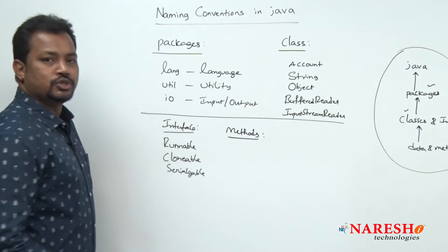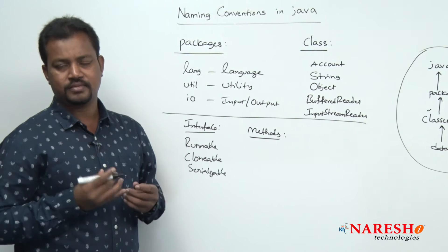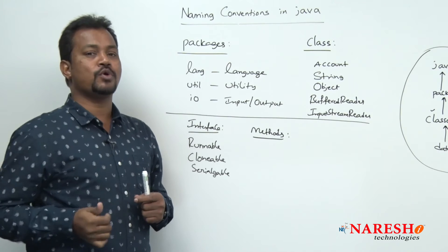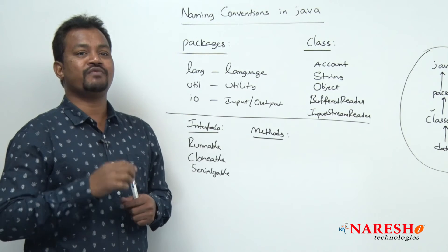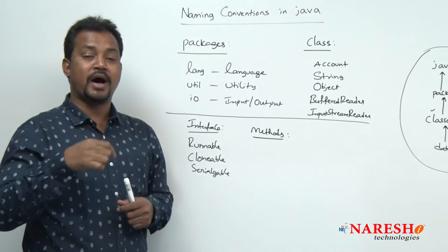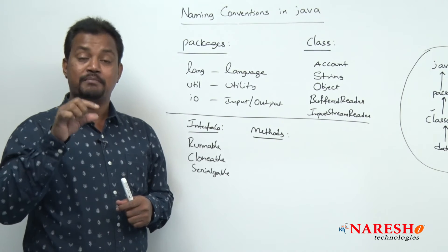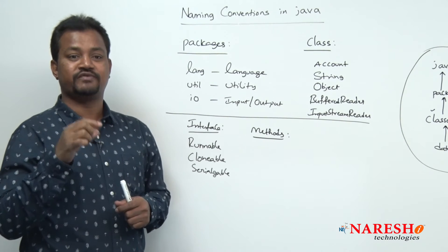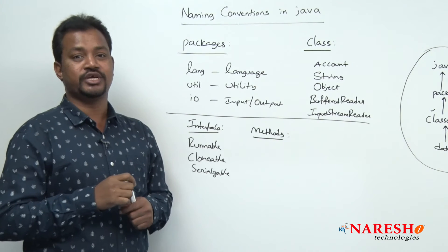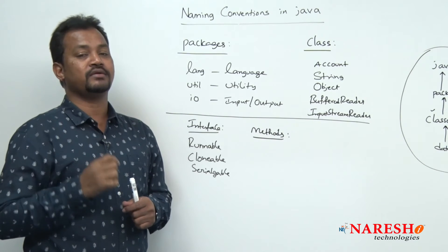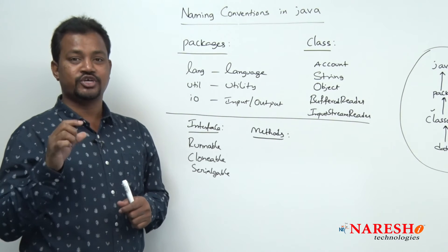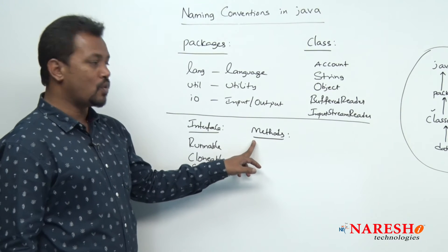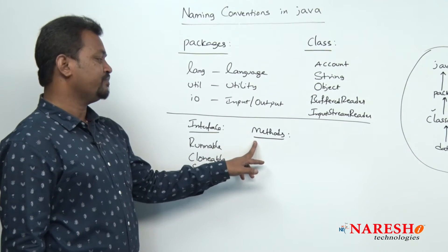Now comes methods. In other languages, you call it a function — the part of program which is executed outside of the main program. When this function became a part of or member of a class in C++, we call it a member function. When this same function entered into the Java class, we call it a method. The method is nothing but the function which is declared only within the class.